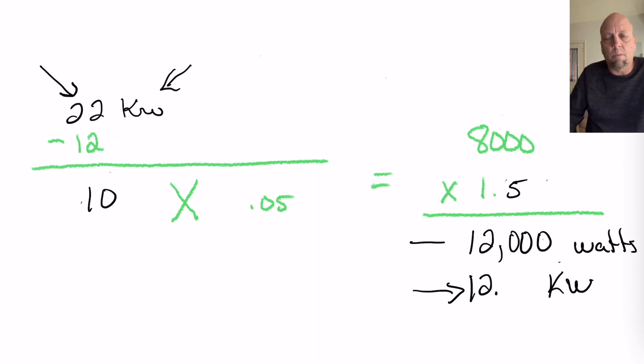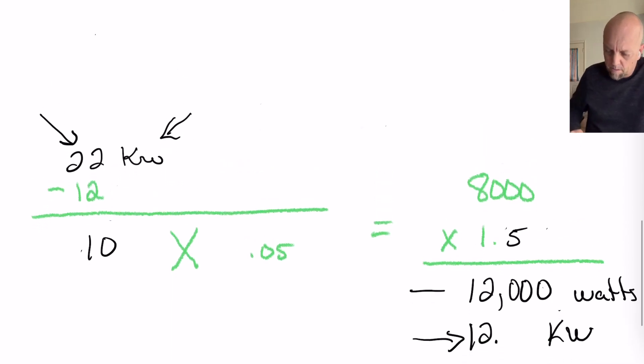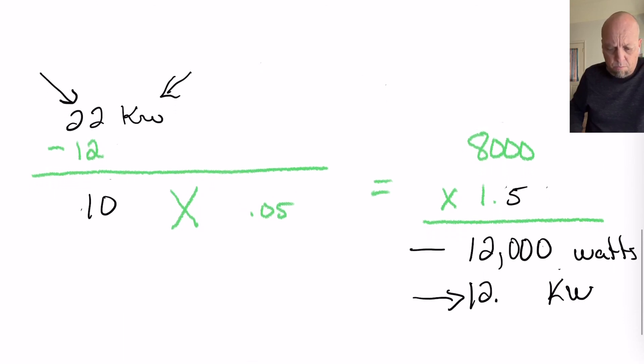Okay, so six months from now, you're coming across a 22 kW range that you need to do a calculation on. You don't have to go through all this. All you have to do is go back in your notes. Look at a 22 kW range. And it's going to be 12 kW. So, this is pretty easy, guys.